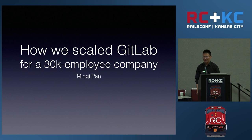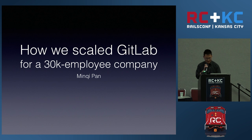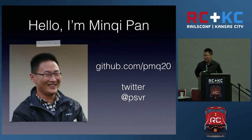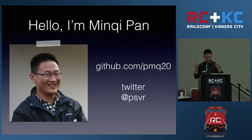But this GitLab thing is a bad boy — it really has some problems, and I'm going to talk about how we fix those problems. Thank you very much for coming to my talk. My name is Minky Pan. I came from China. I work for Alibaba Group, and that is my GitHub account and Twitter handle. You're welcome to follow me.